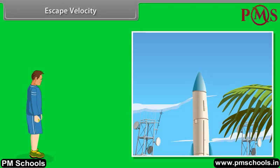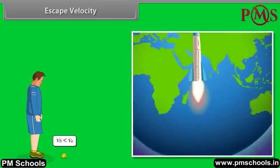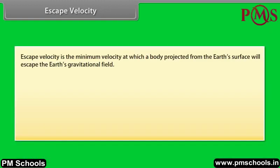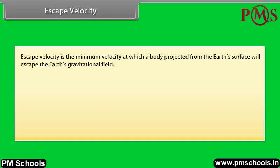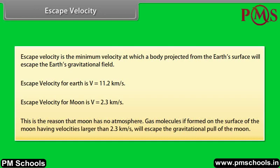Can we throw an object with such high initial speed that it does not fall back to the earth? Yes. If we throw an object with escape velocity, it does not fall back to the earth. Escape velocity is the minimum velocity at which a body projected from the earth's surface will escape the earth's gravitational field. Escape velocity for the earth is 11.2 km/s. Escape velocity for the moon is 2.3 km/s. This is the reason that the moon has no atmosphere — gas molecules formed on the surface of the moon with velocities larger than 2.3 km/s will escape the gravitational pull of the moon.